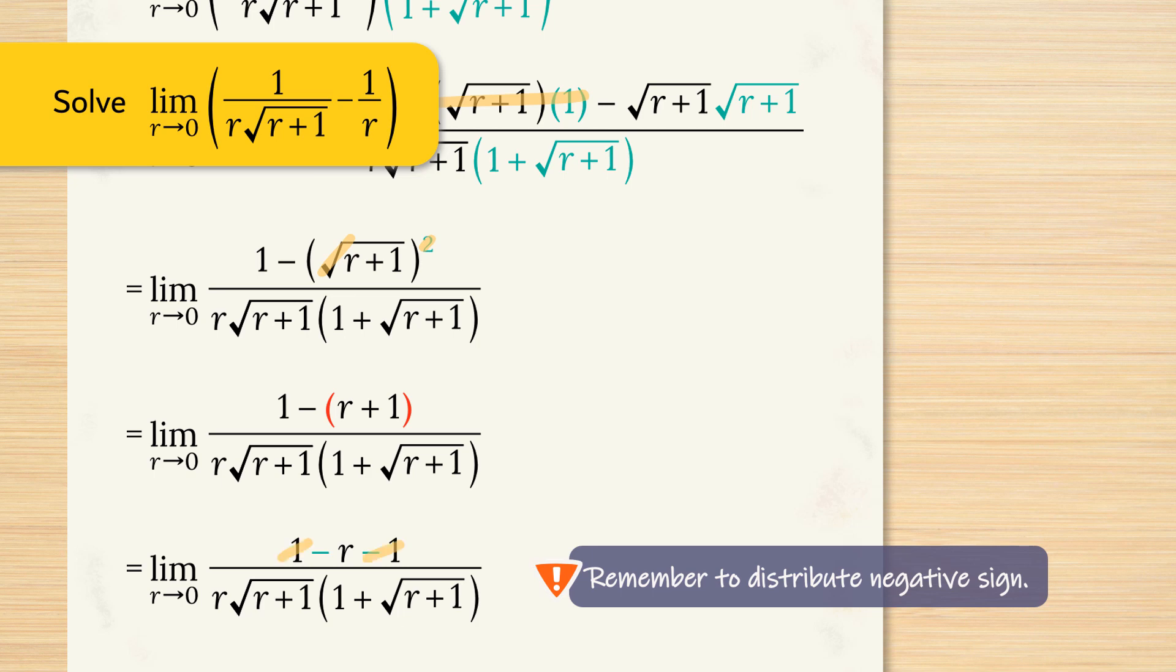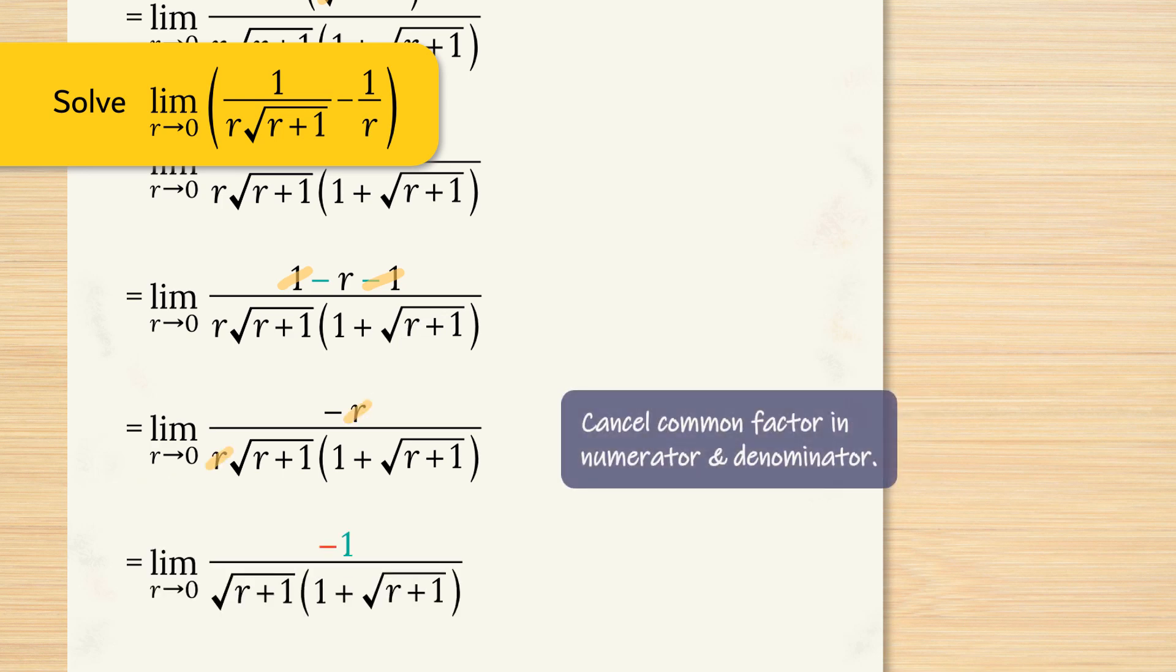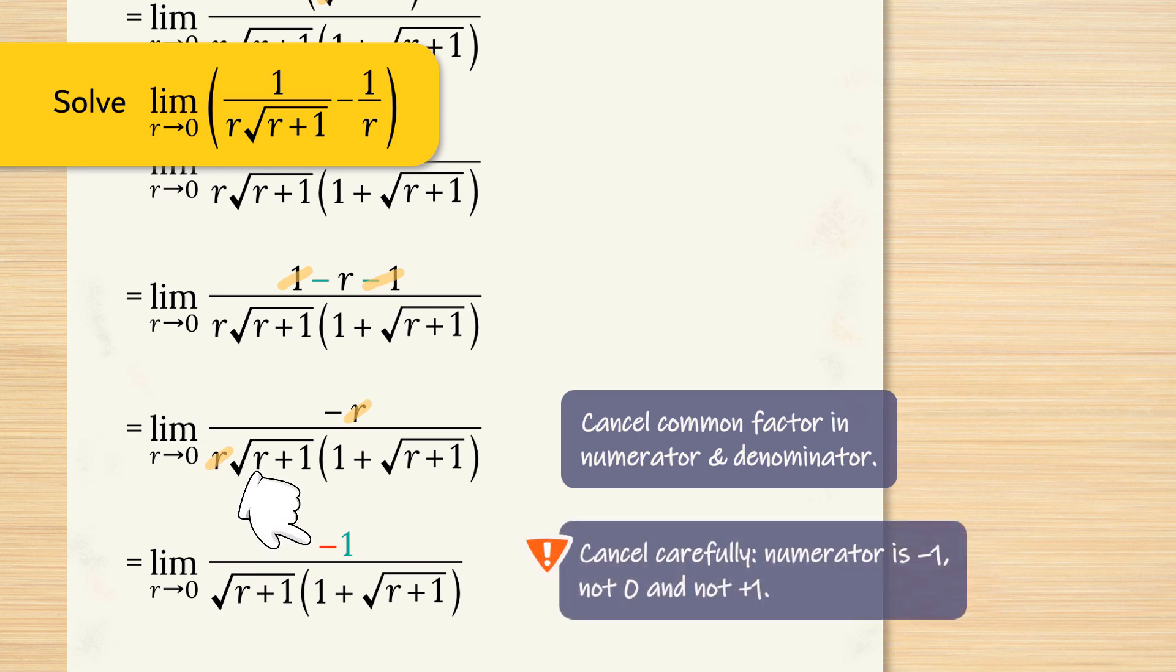The 1 and the minus 1 cancel. We have a negative r on top and a r on the bottom. That factor of r can also cancel top and bottom. We're only cancelling the r, we're not cancelling that negative sign. So that's another place to watch out for.